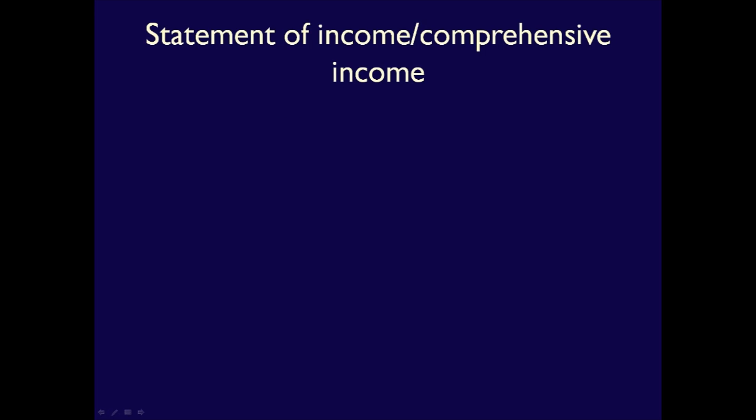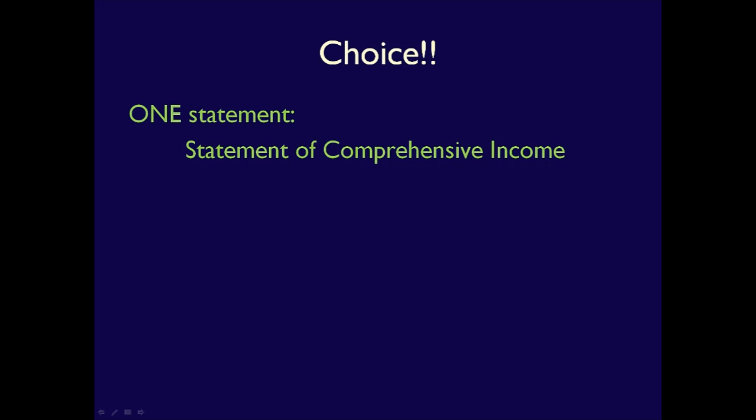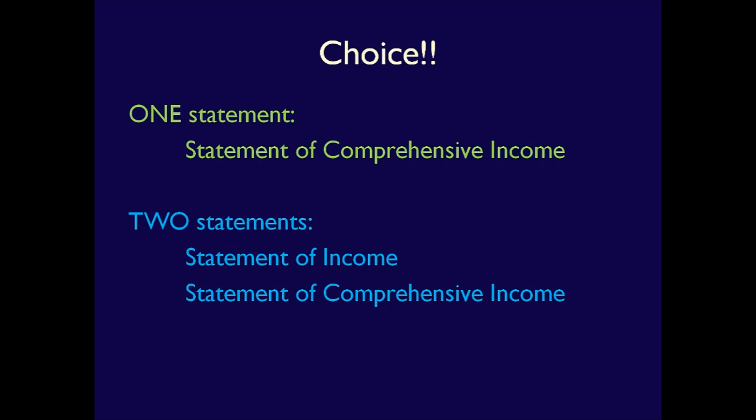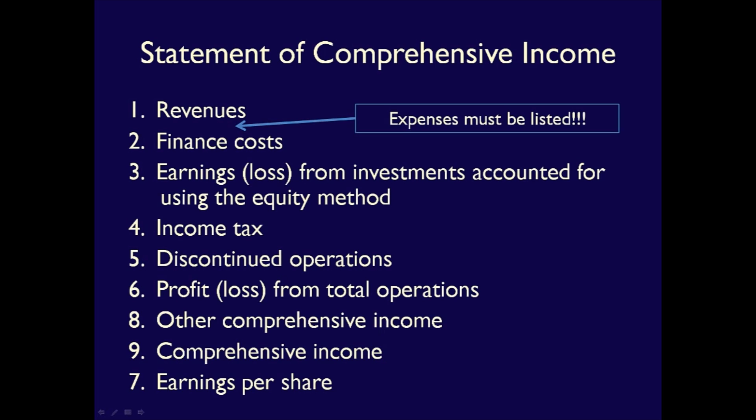Businesses have a choice to do one statement called the statement of comprehensive income, or two statements. If a business chooses one statement, it will be called the statement of comprehensive income. The order of the items follows our listing, but notice that line 7 — earnings per share — is moved down to the bottom of the statement, below the comprehensive income line. Be sure to note this if you decide to complete a statement of comprehensive income all in one statement.